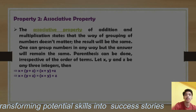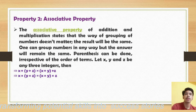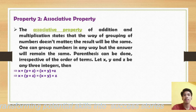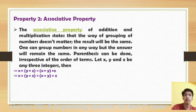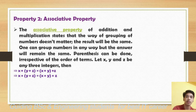The next property is associative property. Associative property of addition and multiplication states that the way of grouping of numbers doesn't matter — the result will be the same. If x, y, and z are three integers, then x plus (y plus z) equals (x plus y) plus z, and x times (y times z) equals (x times y) times z. For example, 1 plus (2 plus minus 3) equals (1 plus 2) plus minus 3 — both answers are 0.